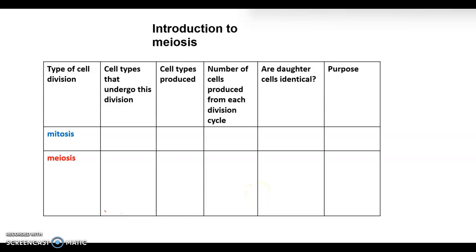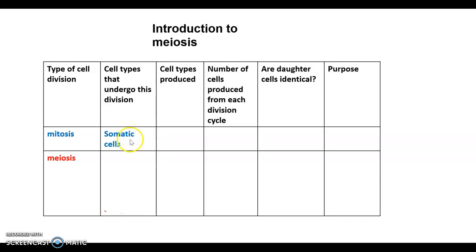Hi everyone. Tonight's video is on the process of meiosis, and I'm going to spend most of this video talking about why a cell even needs to undergo meiosis. First, I'd like to compare the two division processes of mitosis and meiosis. Looking at the cell types: somatic cells — all the cells in your body except those that form eggs and sperm — divide by mitosis. The cells that form eggs and sperm in the ovaries and testes, the sex cells, divide by meiosis.